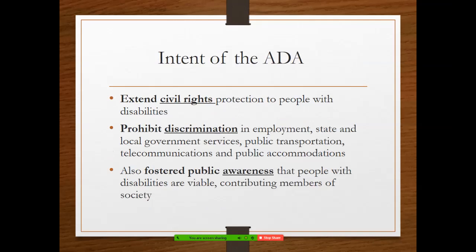What is the intent of the Americans with Disabilities Act? It was to extend the Civil Rights protections given to people of different races and ethnic minorities to people with disabilities. It was designed to prohibit discrimination in employment, state and local government services, public transportation, telecommunications, and public accommodations. It also fostered public awareness that people with disabilities are viable, contributing members of society.